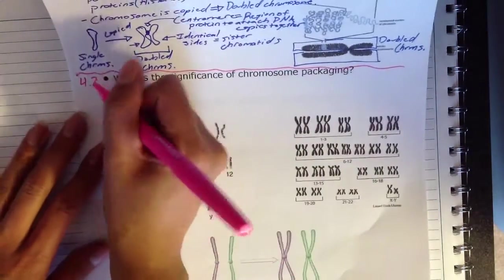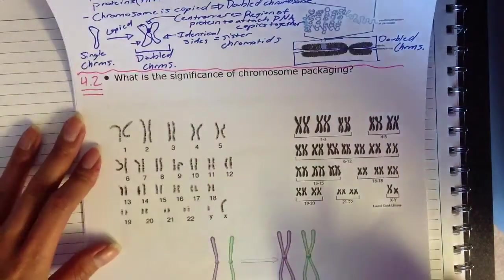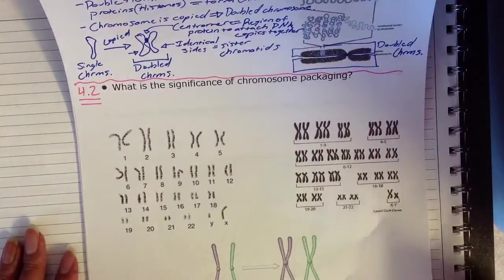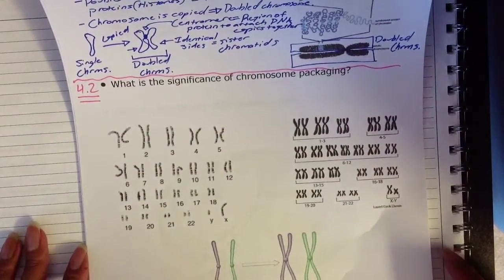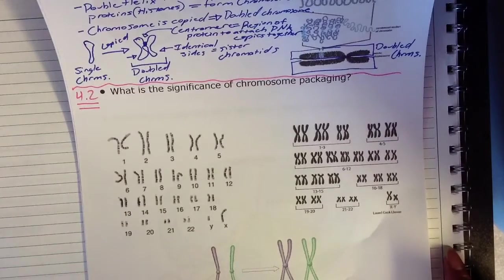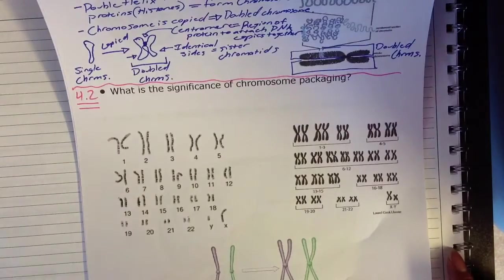So in this section, we're on our notes, section 4.2, and we're going to start by talking about the significance of chromosome packaging, and then we're mainly going to focus on the actual steps within the cell cycle.